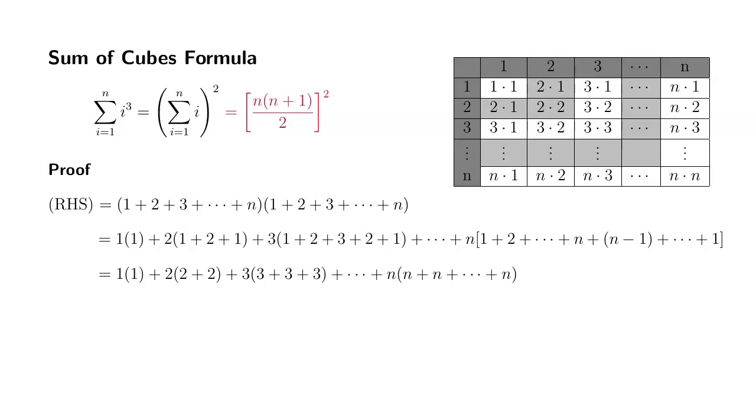So inside the parentheses, we're going to get 1, which you can write as 1 times 1. 2 plus 2 can be written as 2 times 2. 3 plus 3 plus 3 can be written as 3 times 3. n plus n all the way to n can be written as n times n.